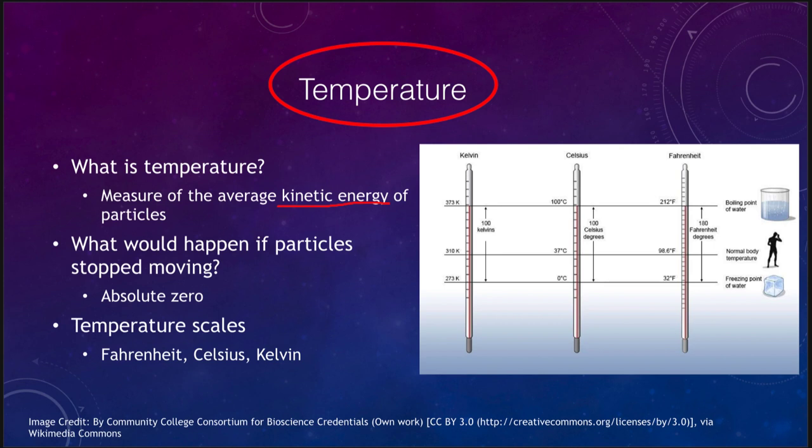Now that kind of begs the question, what would happen if you could stop those particles from moving all together? If you could continue to decrease the temperature, in that case we would reach what we call absolute zero, as cold as things can possibly get.